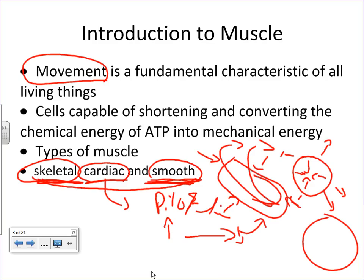Smooth muscle is also responsible for peristalsis — the rhythmic muscle contractions of your GI tract, such as your stomach and intestines. When you eat food, you swallow it consciously, but after that you have no conscious control. Your food moves throughout your 20 feet of small intestine and five feet of colon on its way to the rectum. The movements of smooth muscle allow that to take place. Movement is a fundamental characteristic that keeps us alive on many different levels.